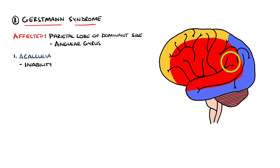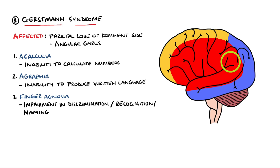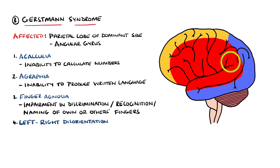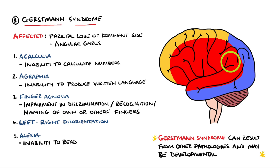The features include a tetrad of symptoms: acalculia and agraphia, which are the inability to calculate and the inability to write; finger agnosia, which is the impairment in discriminating, recognizing, or naming their own fingers or the fingers of others; and left-right disorientation. Another potential finding in Gerstmann's is alexia, which is the inability to read. Note that although Gerstmann's syndrome can result from stroke, there are other etiologies as well, including aneurysms and even developmental Gerstmann's syndrome.